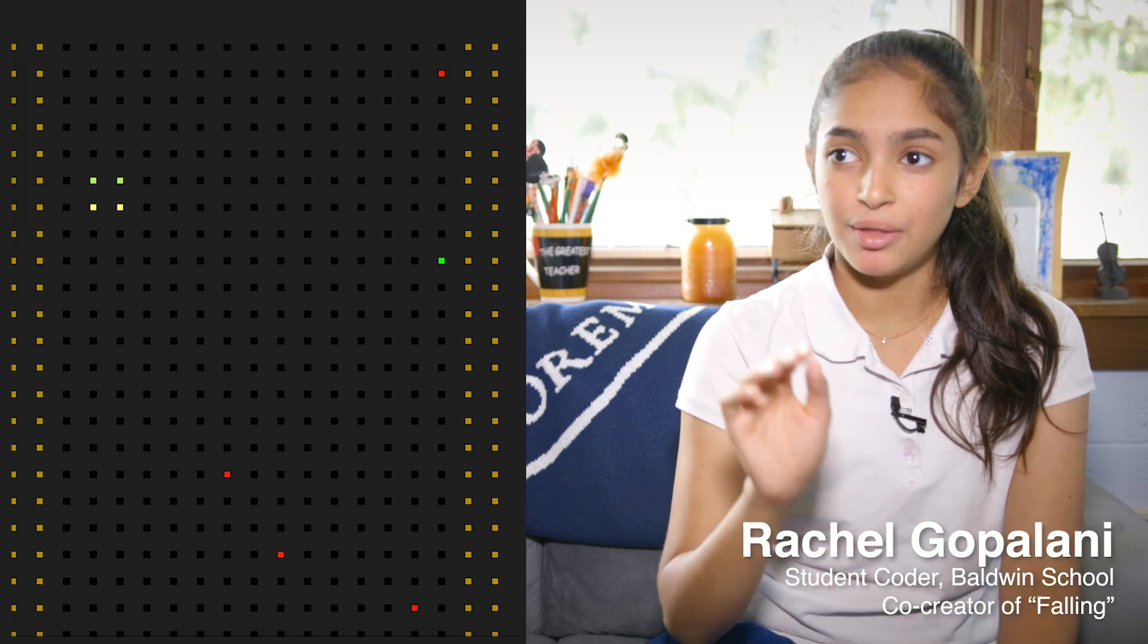You try not to get hit by the red ones. When you hit the red blocks it degrades a part of your character, and when you hit the green blocks it makes part of your character green.